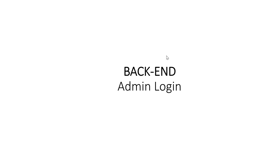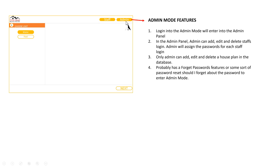Now for the back end — the admin login, or admin mode. I'll probably have to click somewhere to access it. To put things simply, when I click to log into admin mode, I will enter the admin panel. In the admin panel, only admin can add, edit, and delete staff logins. So if I am admin, I will be distributing passwords to my staff. If a staff member quits the job, I can delete their login credentials. That's the purpose of this admin mode.